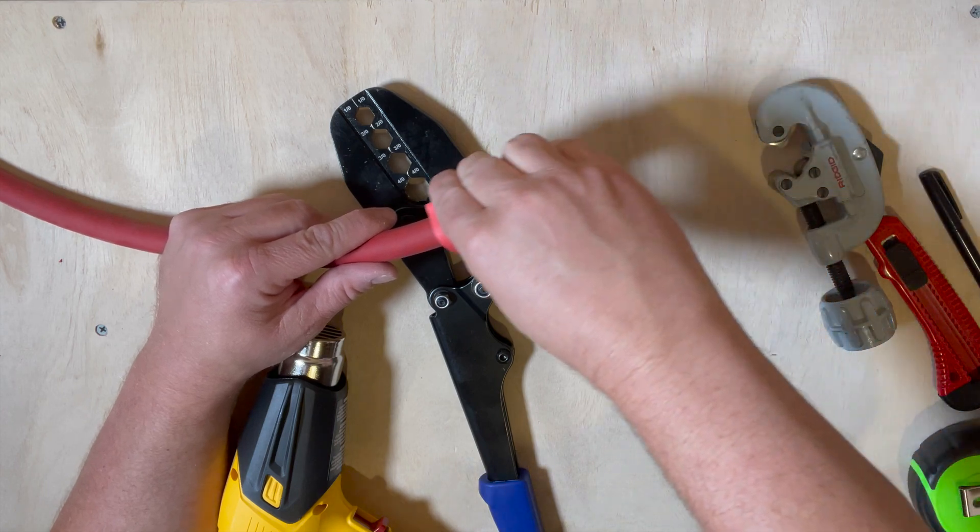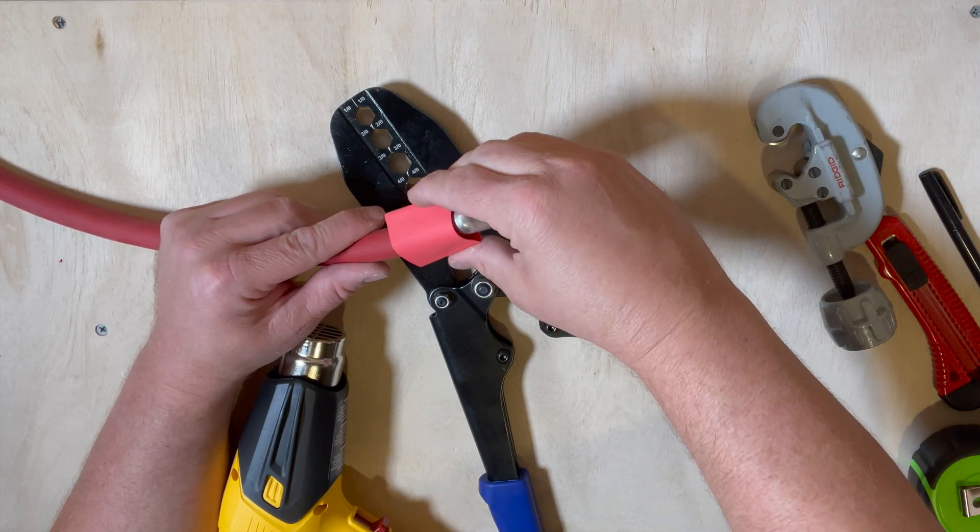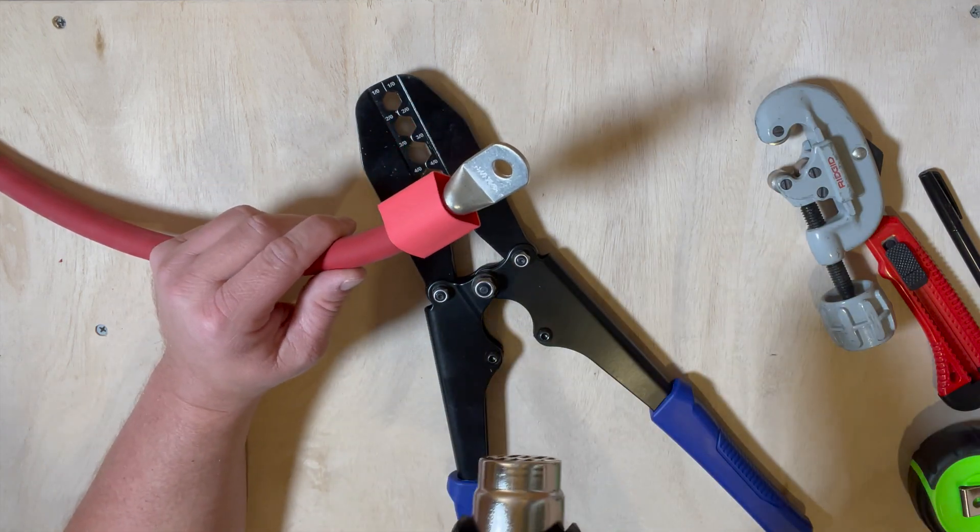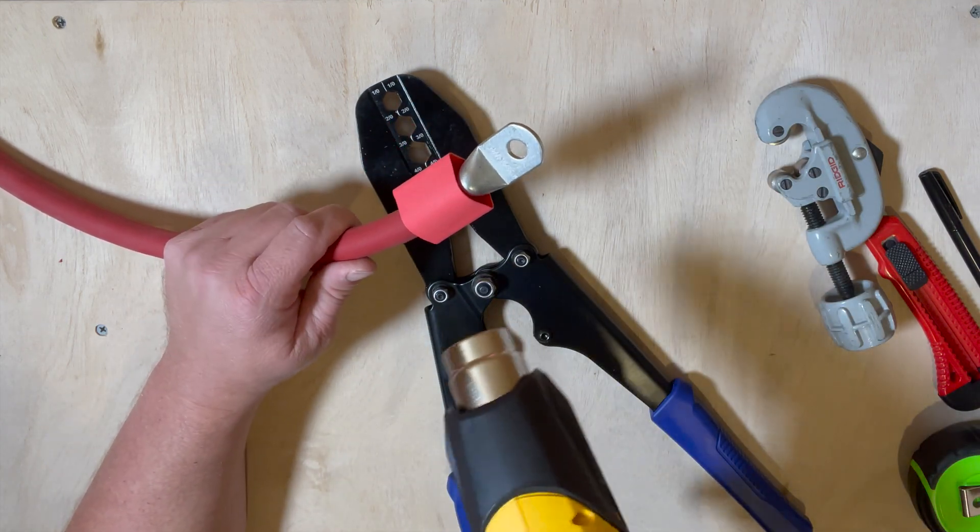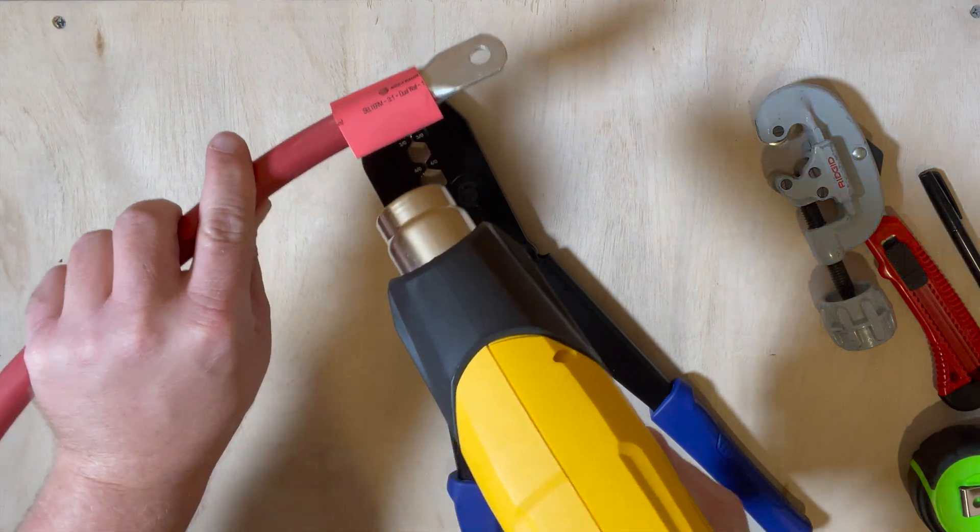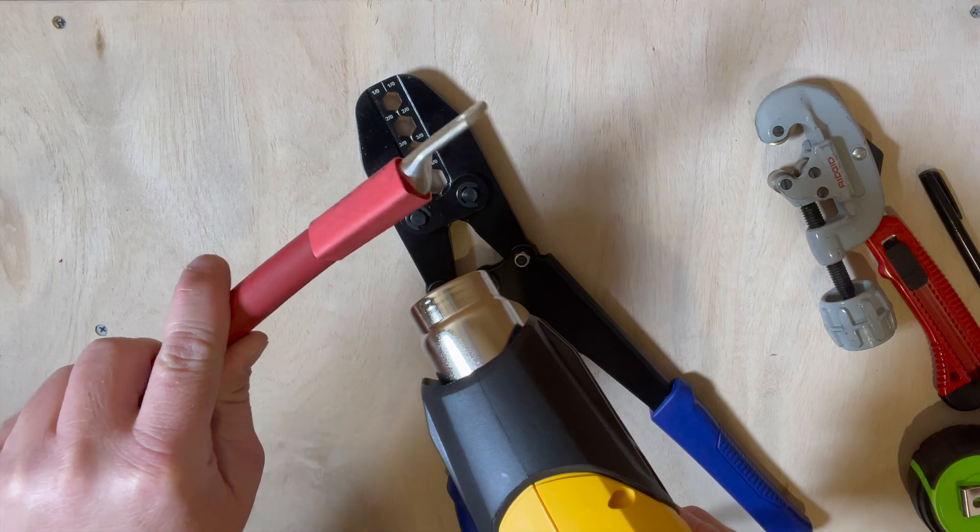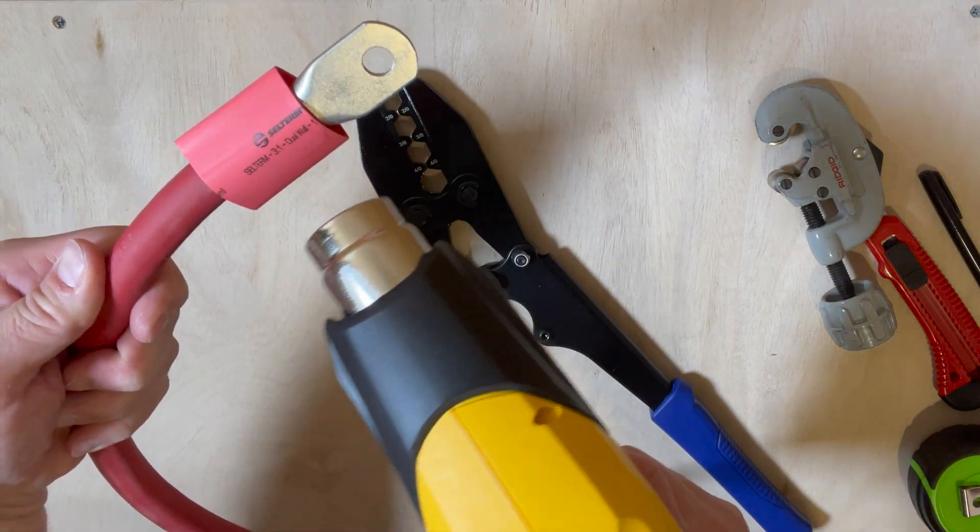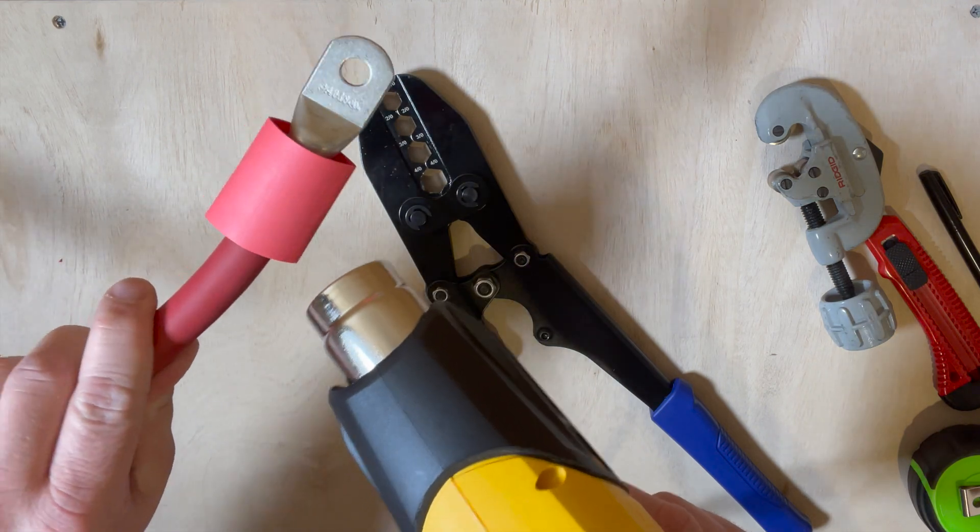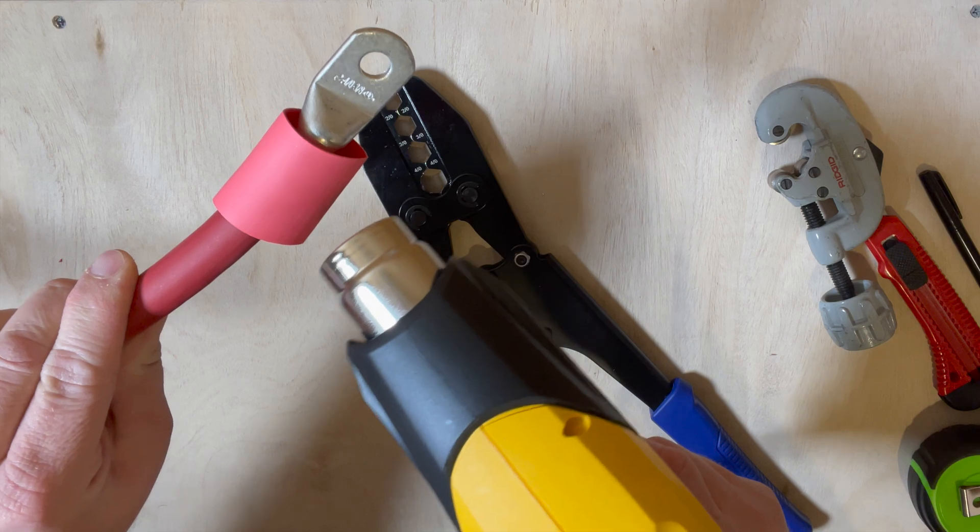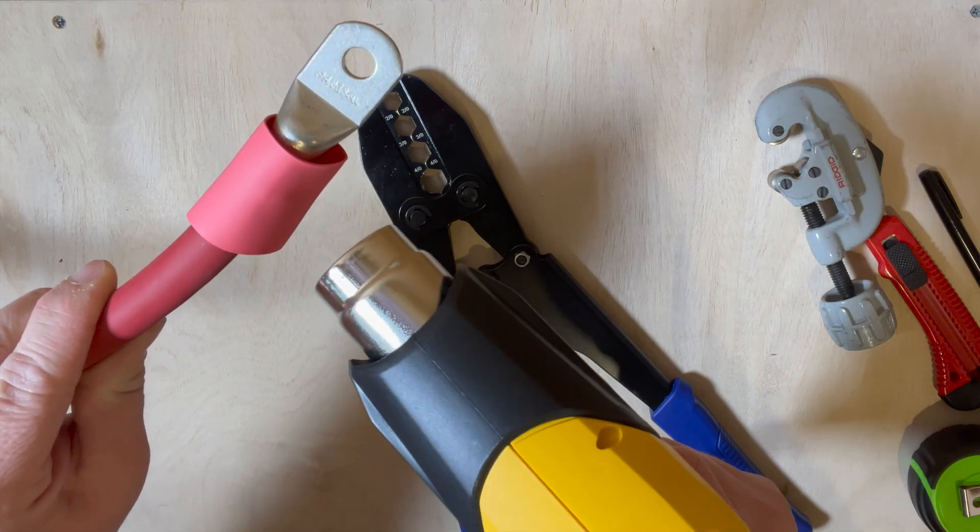Now this just slips on over here like this. Do I just kind of evenly rotate? I have this heat gun on low, the first setting. It doesn't need to be on high.